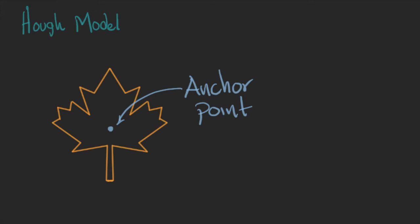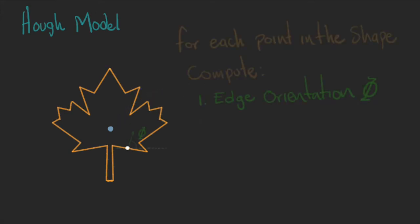Now, for each point in the shape, we're going to calculate the gradient orientation that we call phi, the distance to the anchor point, let's call it r, and the angle of this vector, let's call this alpha.